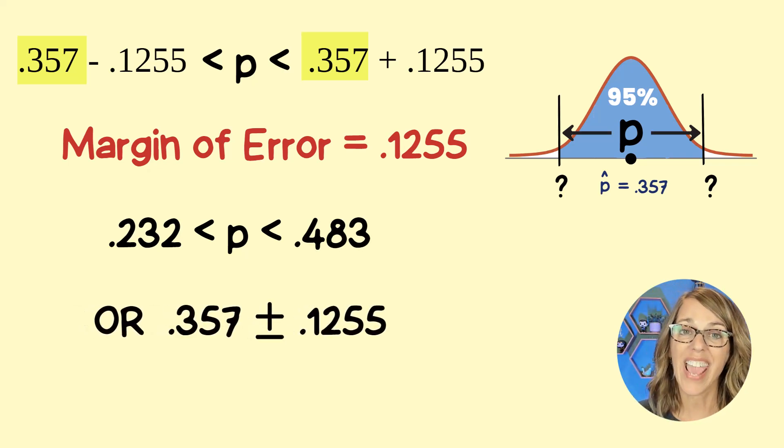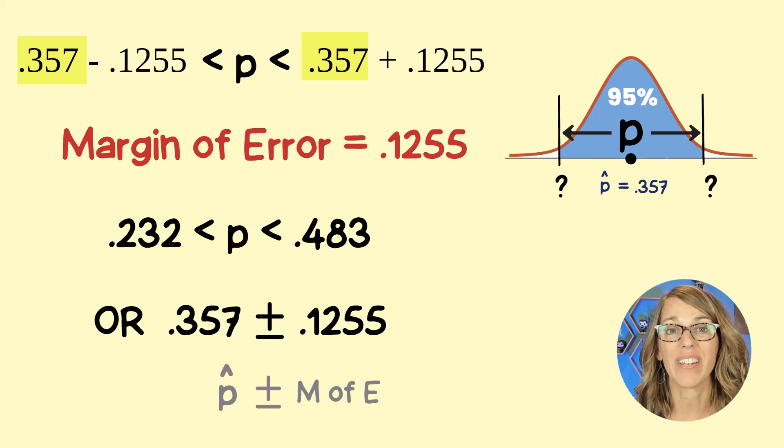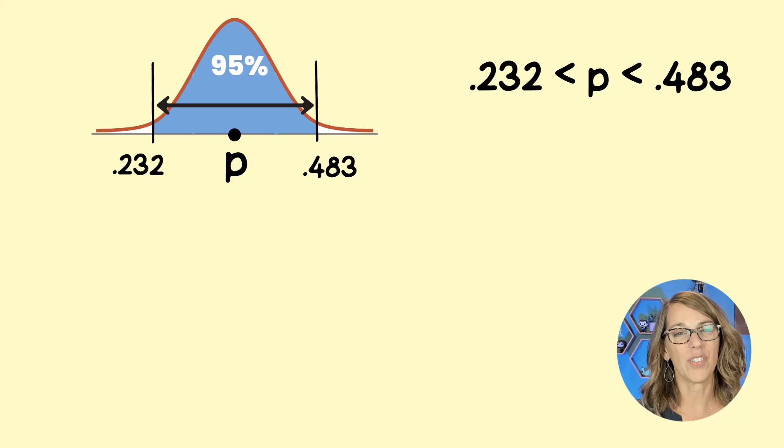We can also read this as the point estimate, 0.357, plus or minus that margin of error. We have our answer kind of, sort of, but our answer isn't just this inequality or just the diagram that we've got here.